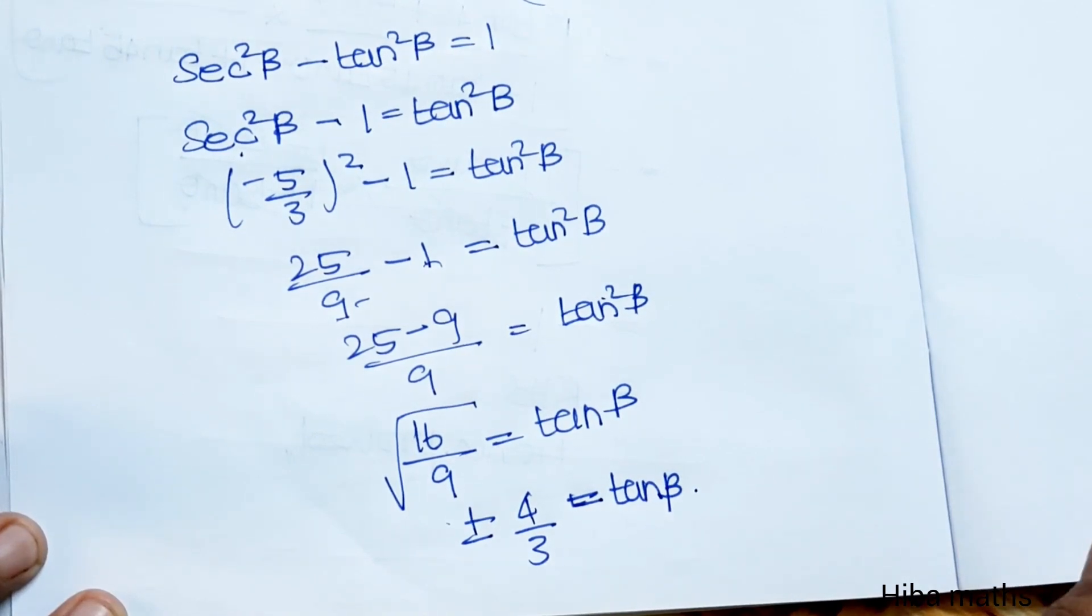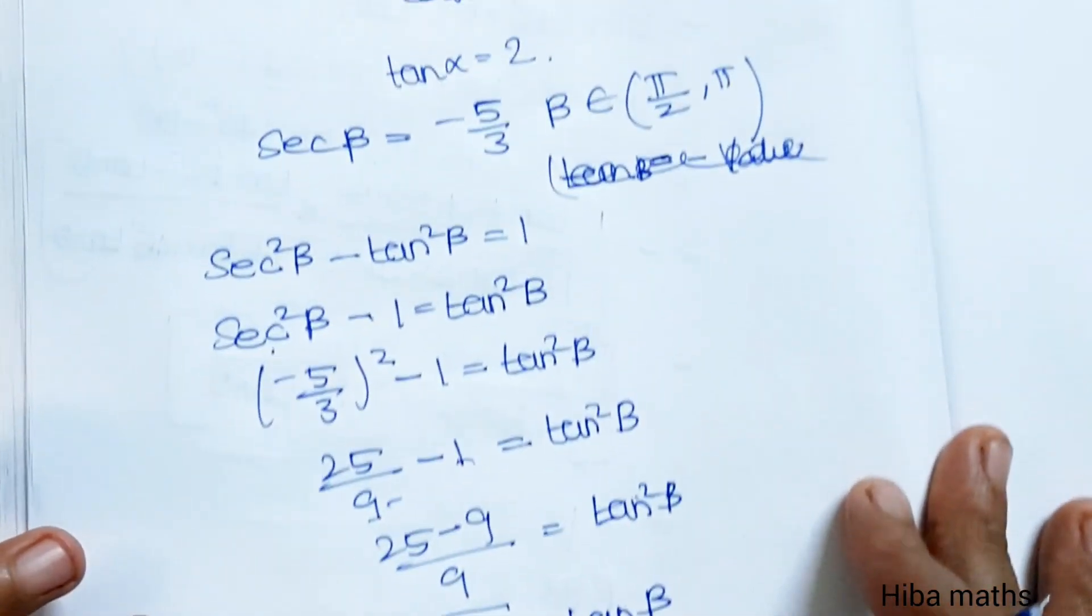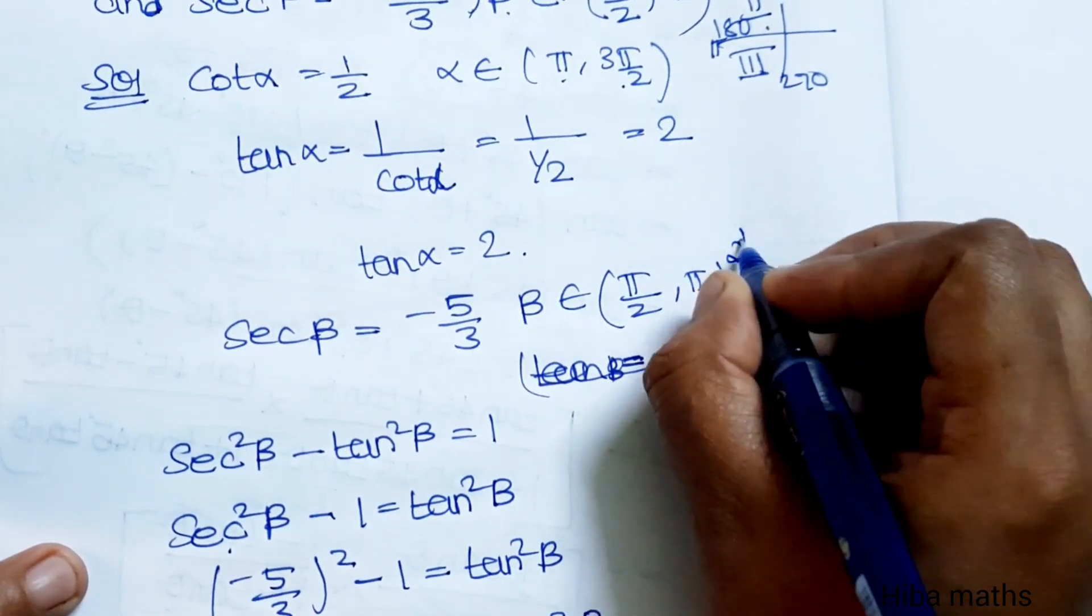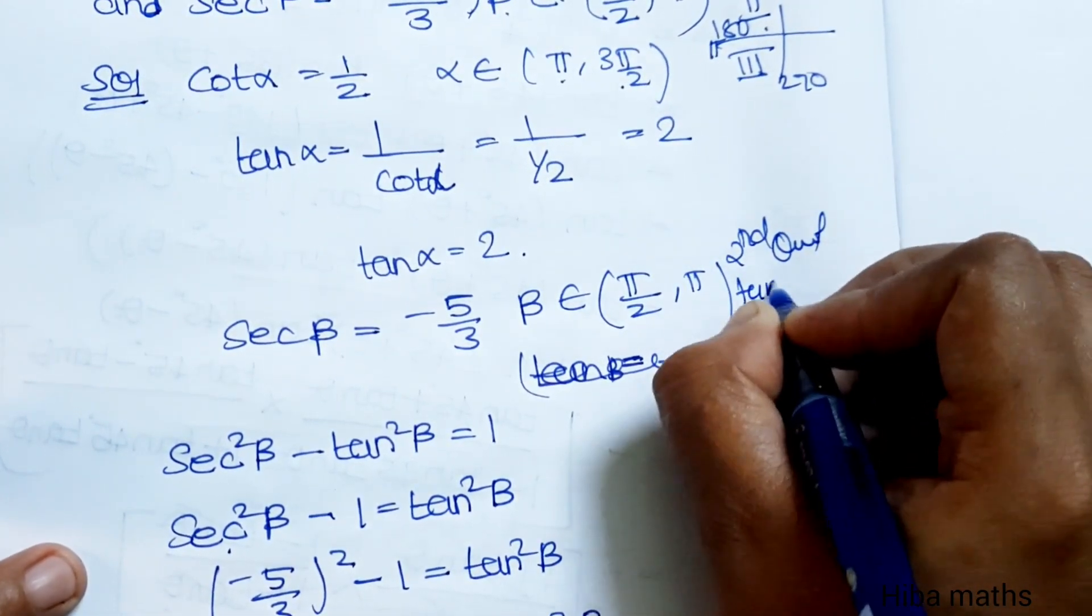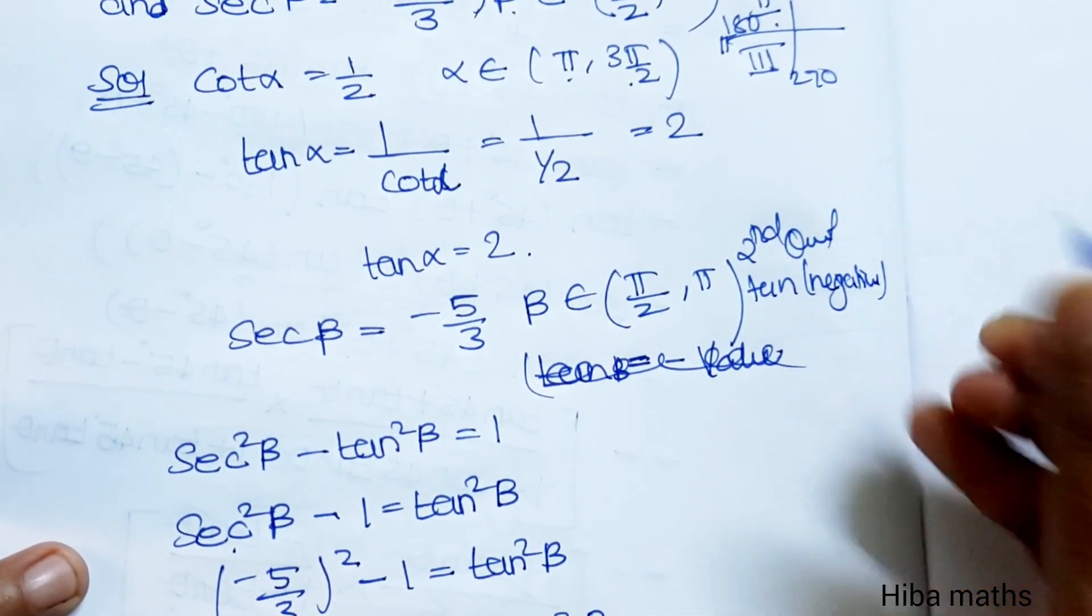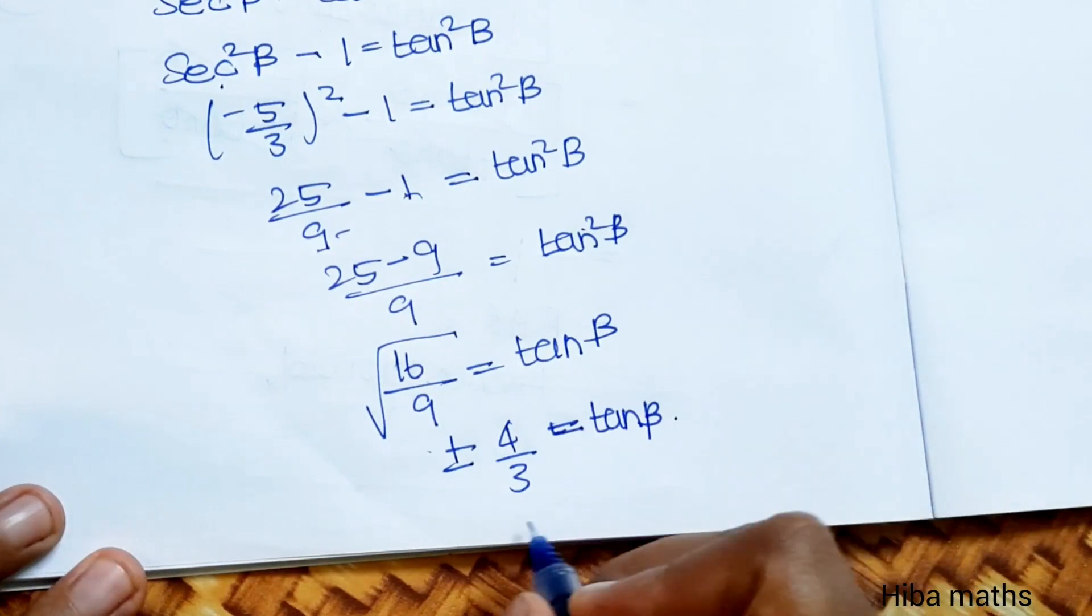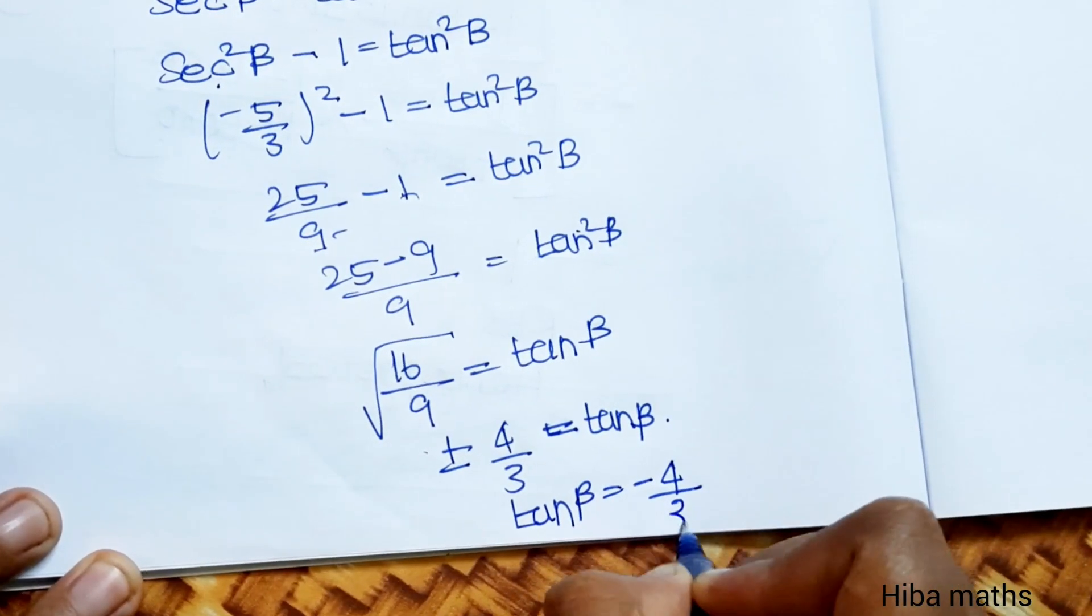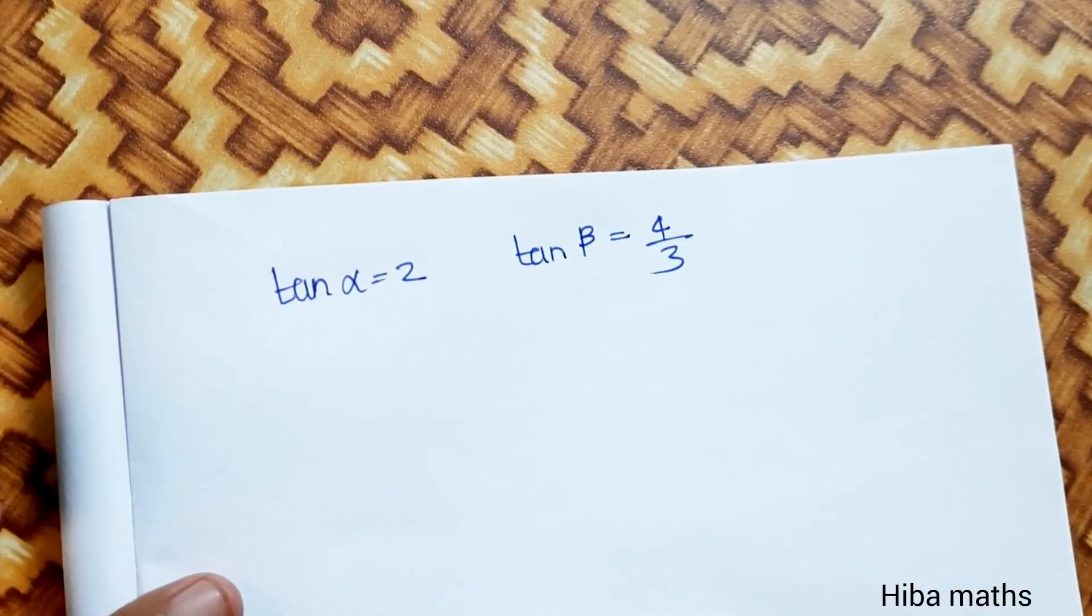Taking the square root, tan β equals ±4/3. But considering the second quadrant, where tan is negative, tan β equals -4/3.